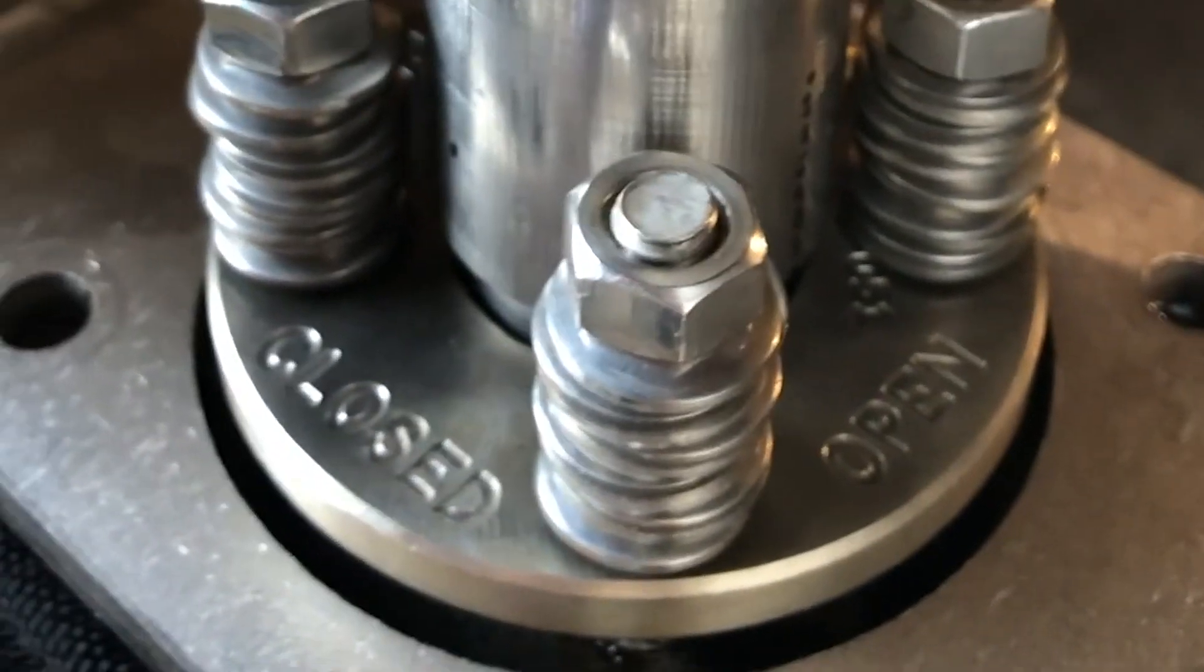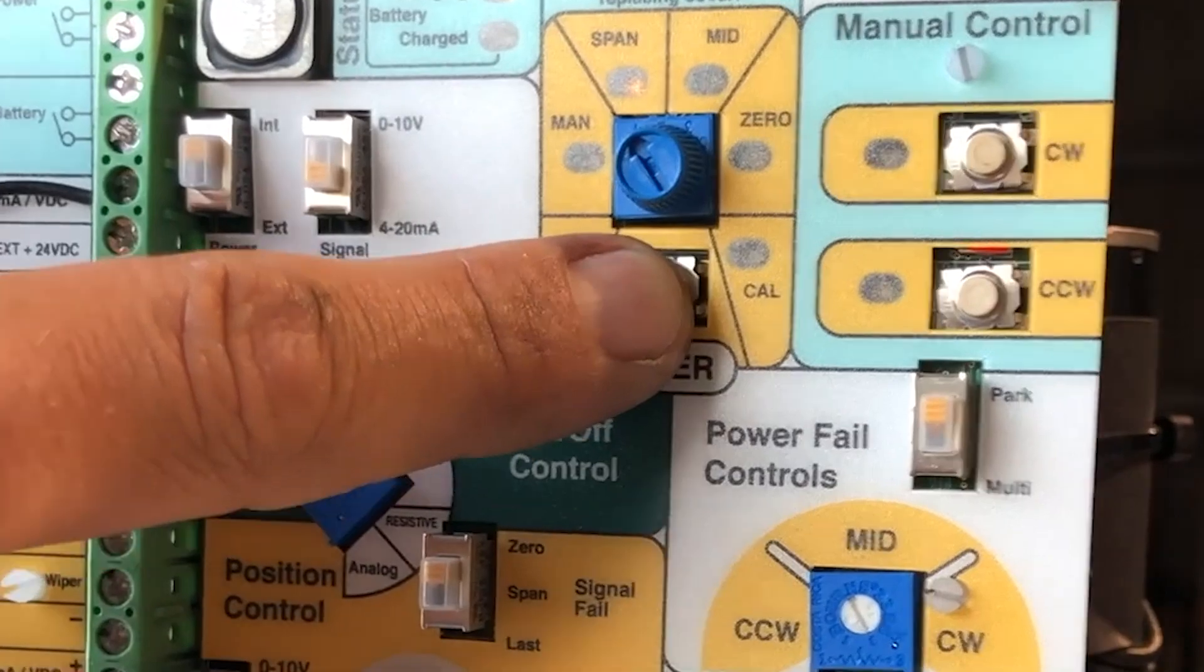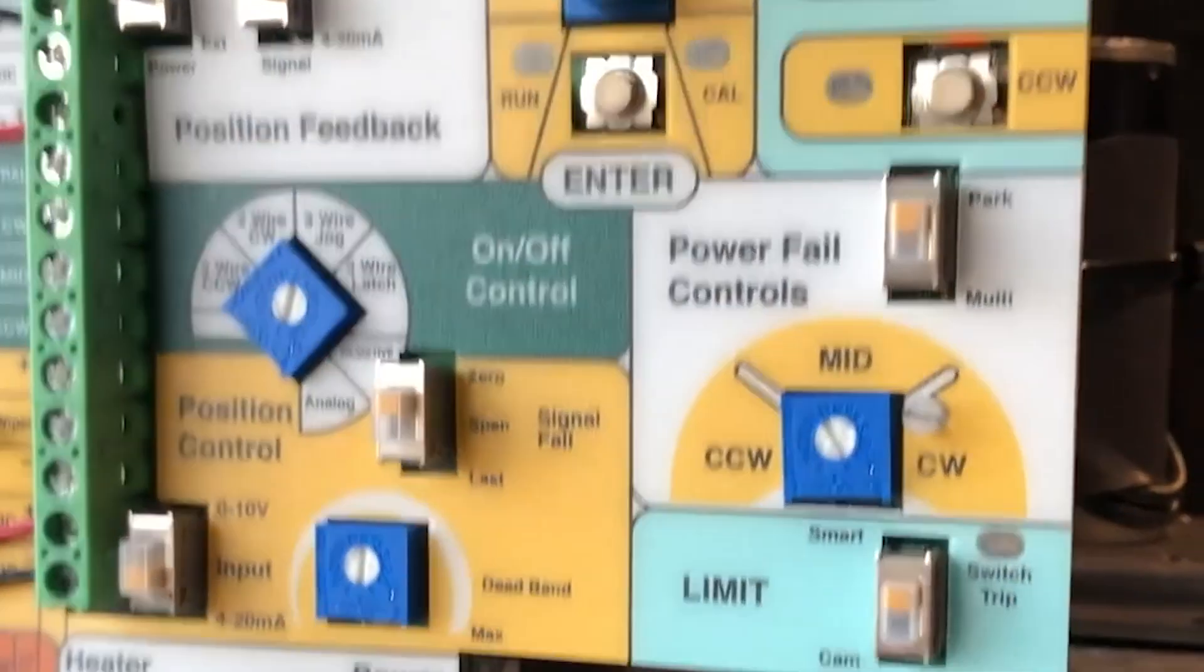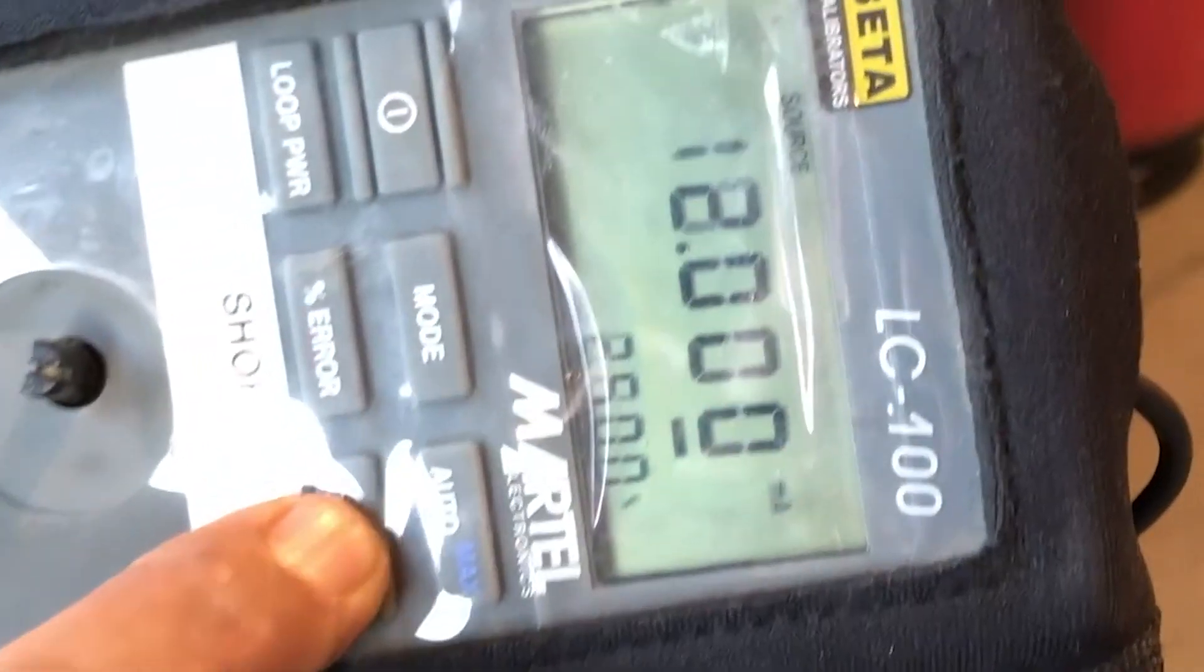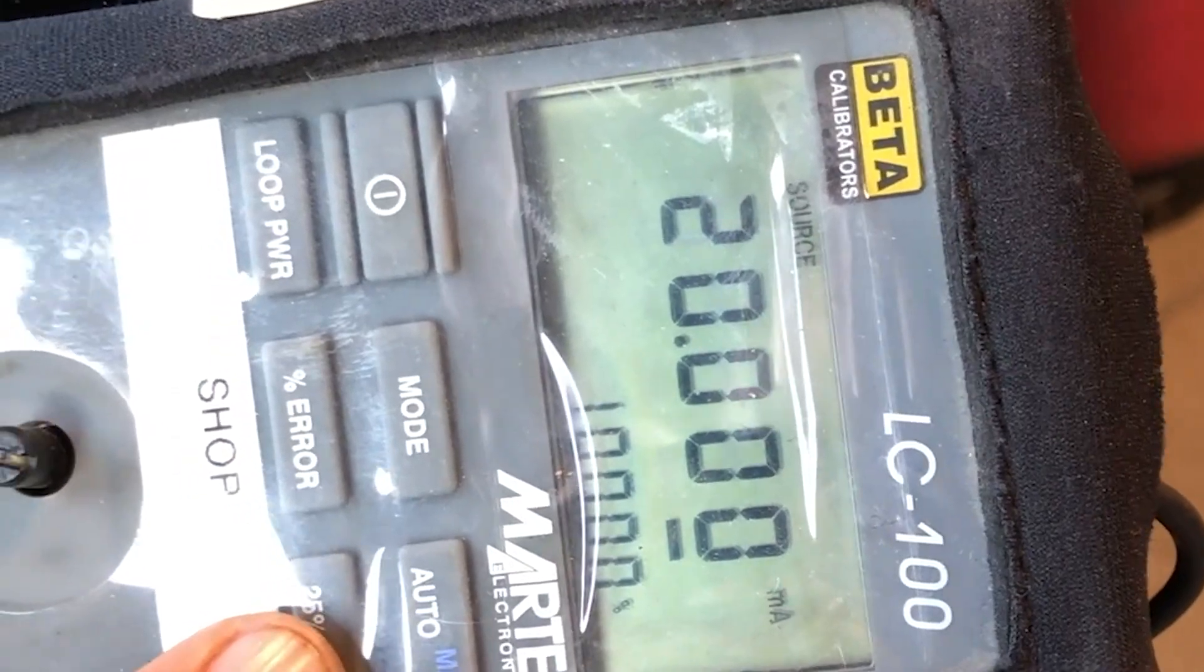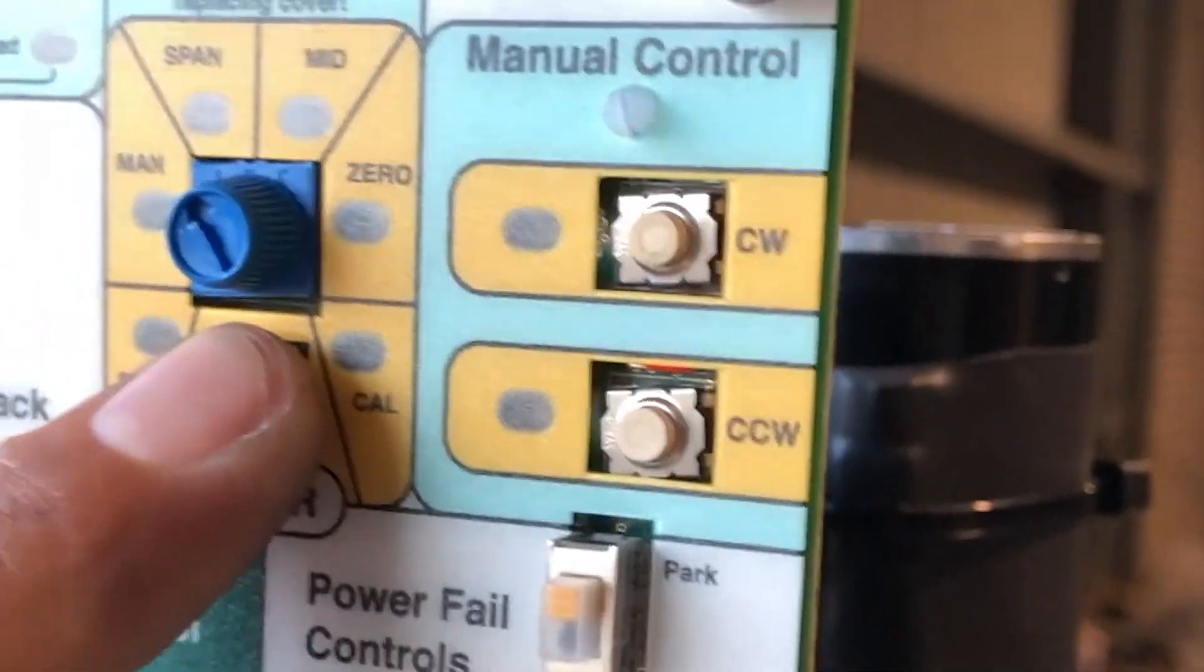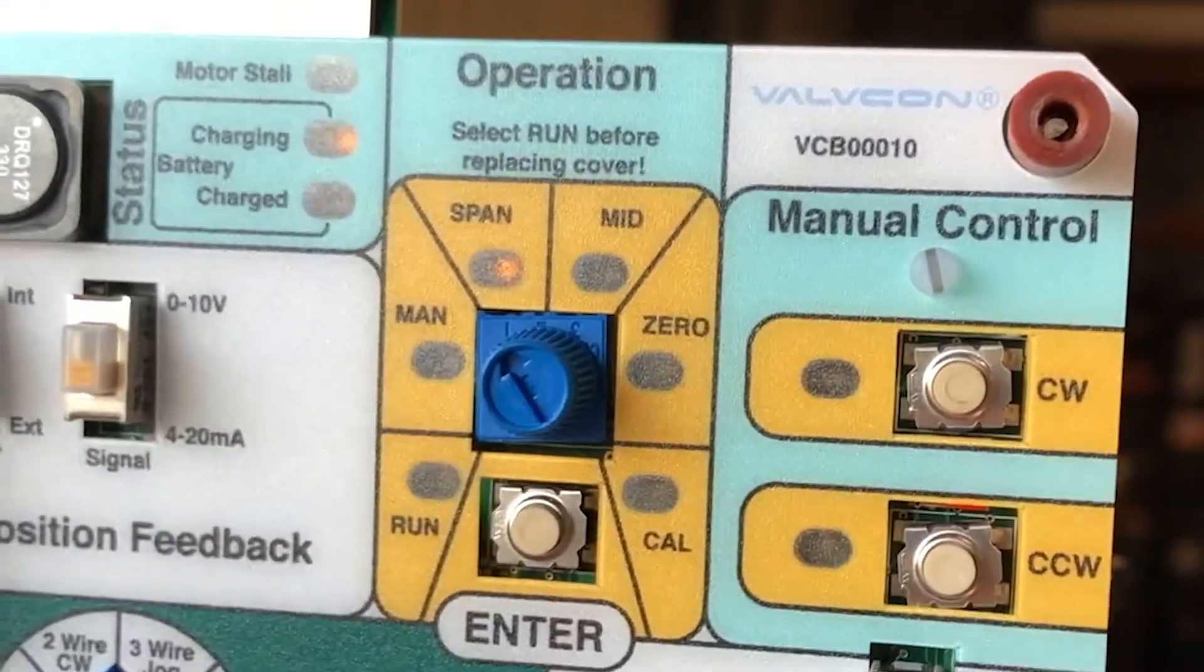Next we want to hold down enter for one second. We want to supply 20 milliamps to our actuator. We want to press enter for the actuator to take the change.